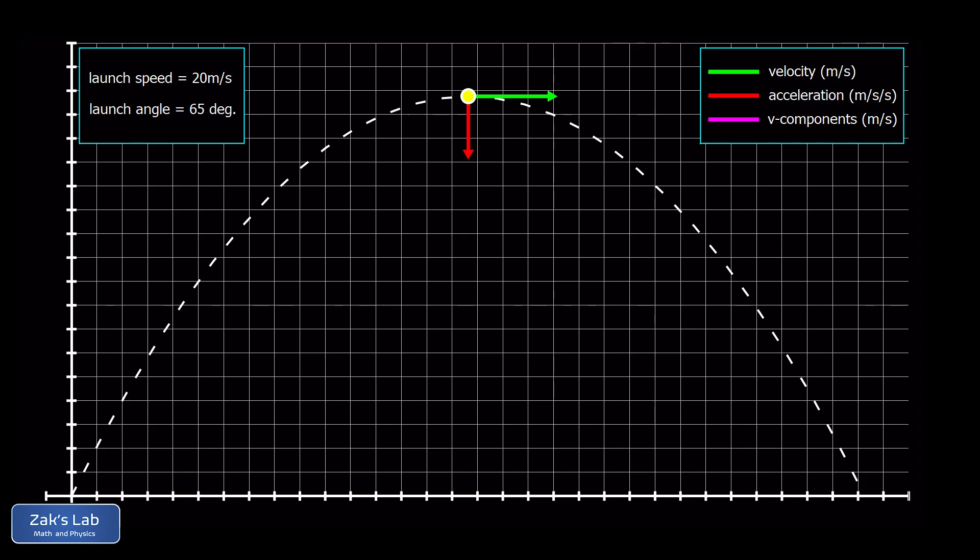Note that the x-velocity never changes because there's no acceleration in the x-direction. So the total velocity at the top of the trajectory is just equal to the initial x-velocity, which never changes.